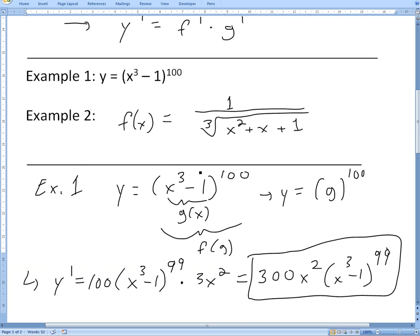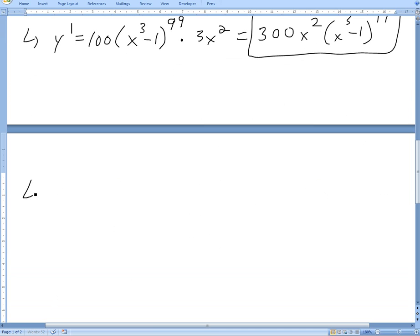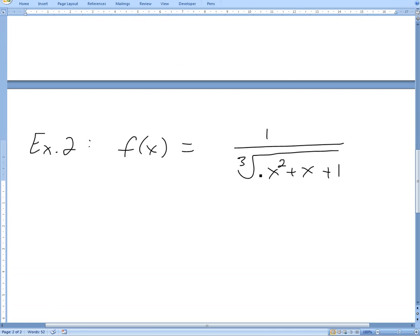Now if we look at example 2, this one looks a bit more complicated because it says find derivative of f of x equals 1 divided by the cube root of x squared plus x plus 1 right here. So we'll just write that down. Example 2.